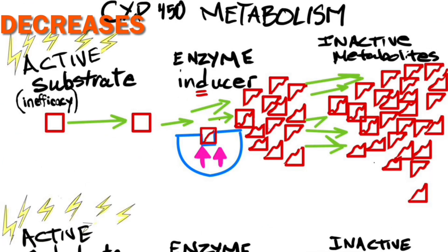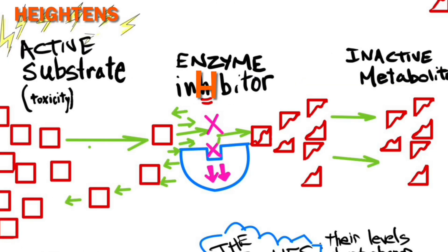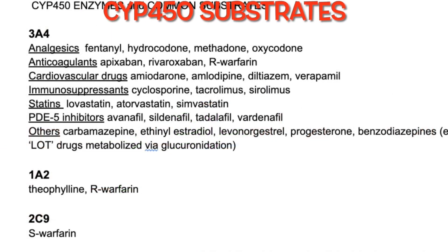An easy way to remember this is that inducers decrease, while inhibitors heighten the level of the substrate in the blood. Understanding how drugs interact with CYP enzymes is crucial in determining drug efficacy and potential drug-drug interactions. Some drugs can act as both inducers and inhibitors — they can even act as substrates.